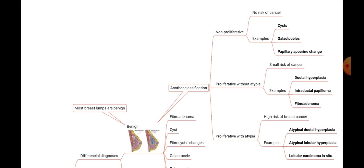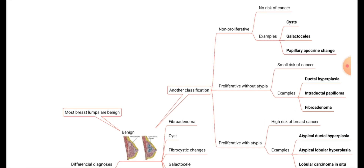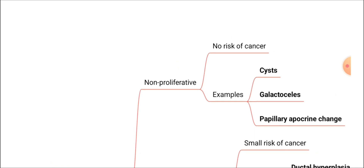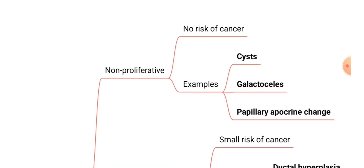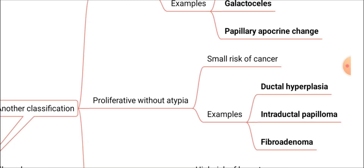Proliferative with atypia has high risk of breast cancer. Looking at examples: the non-proliferative benign breast lesions are breast cysts, galactoceles, and papillary apocrine change — these lesions do not have any risk of breast cancer. The proliferative without atypia examples are ductal hyperplasia, intraductal papilloma, and fibroadenoma — this category has a small risk of cancer.